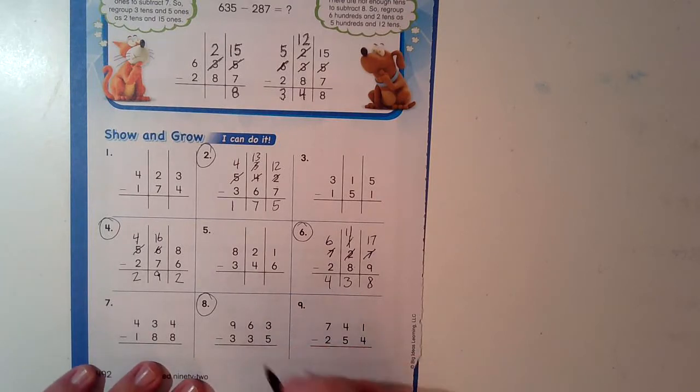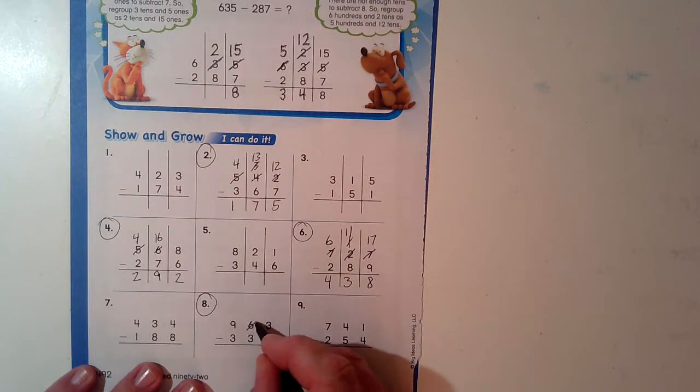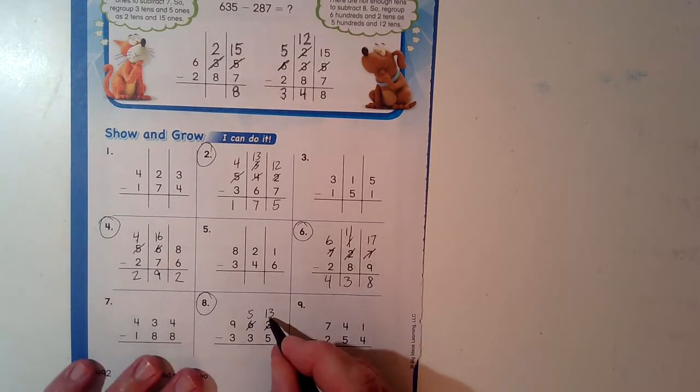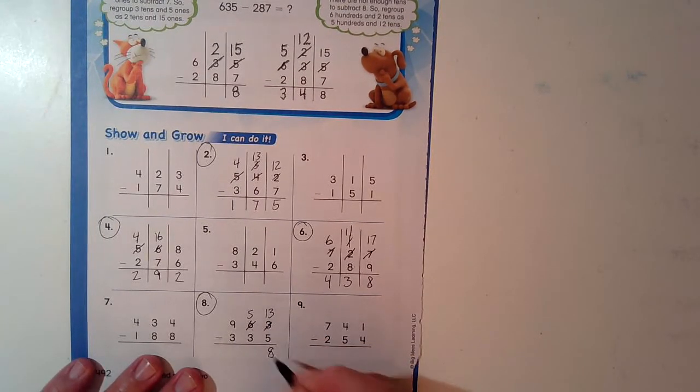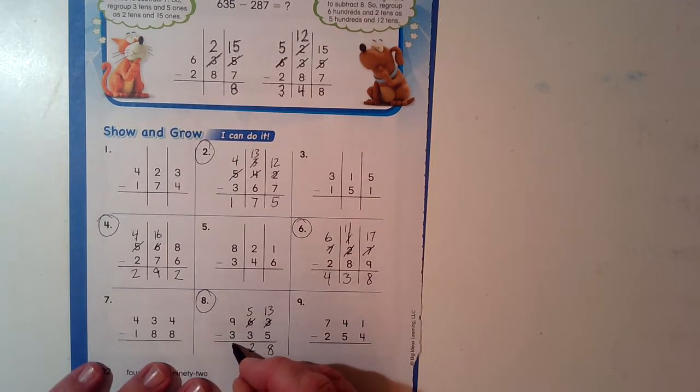Even problem. 5 minus, or I'm sorry, 3 minus 5. Can I do it? No, can't do it. Take away from here. 5. Can I put that 10 right here? I don't have 3, I have 13. 13 minus 5 is 8. 5 take away 3, can I do it? Absolutely. 2. 9 take away 3. Yes. 6.